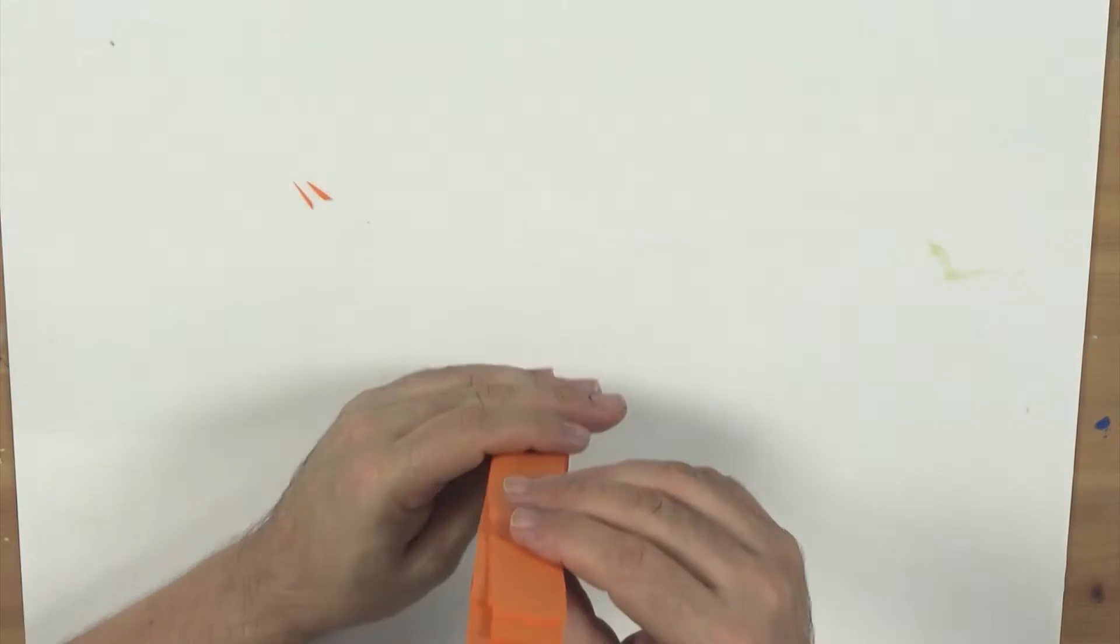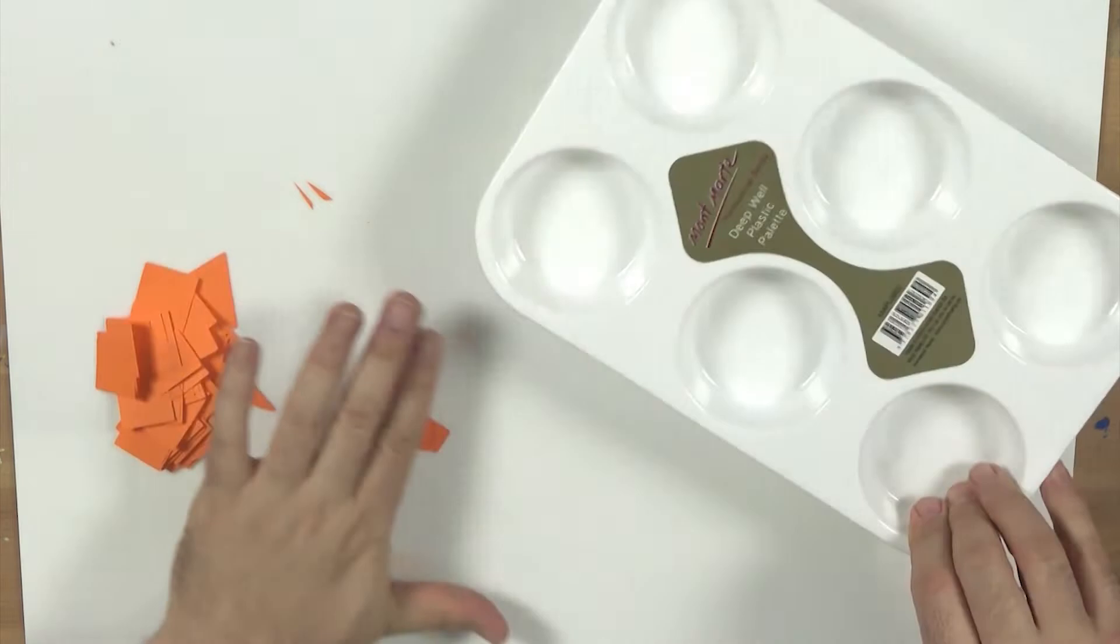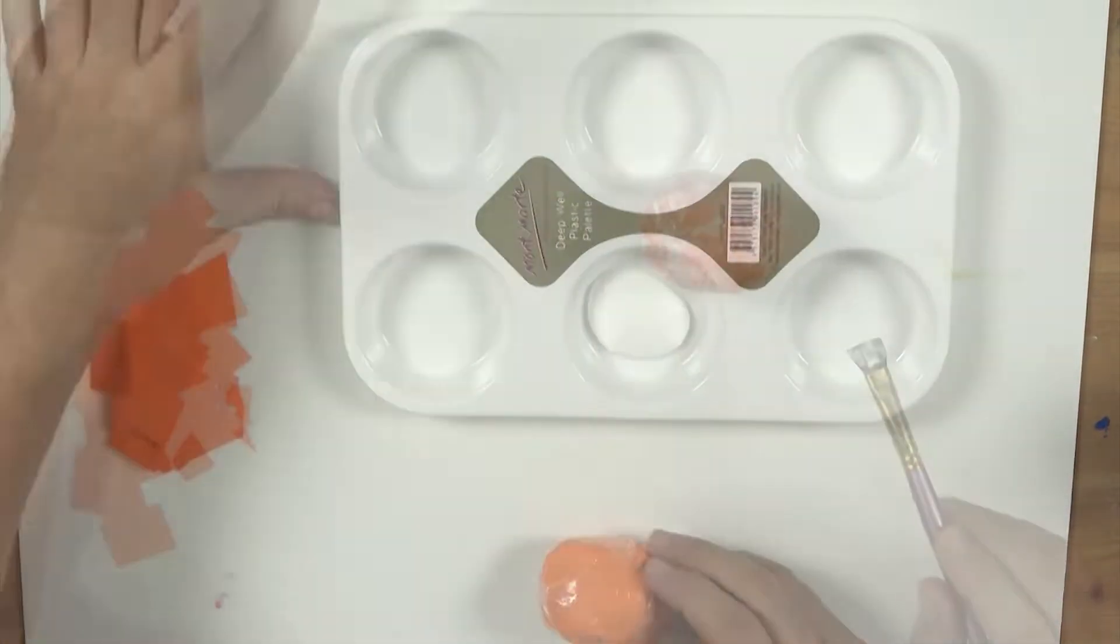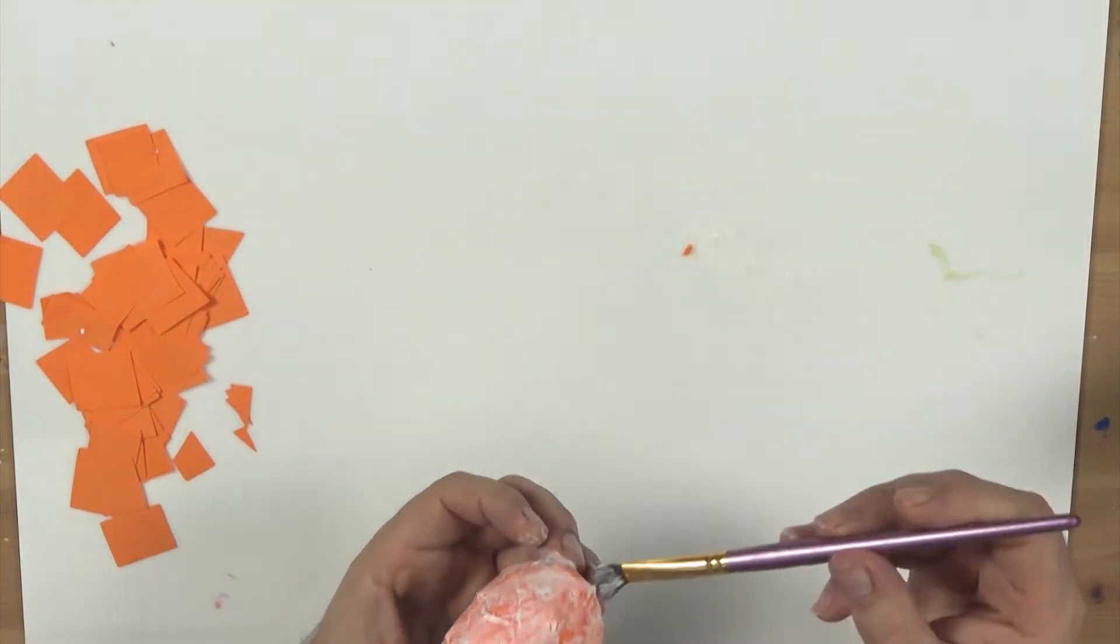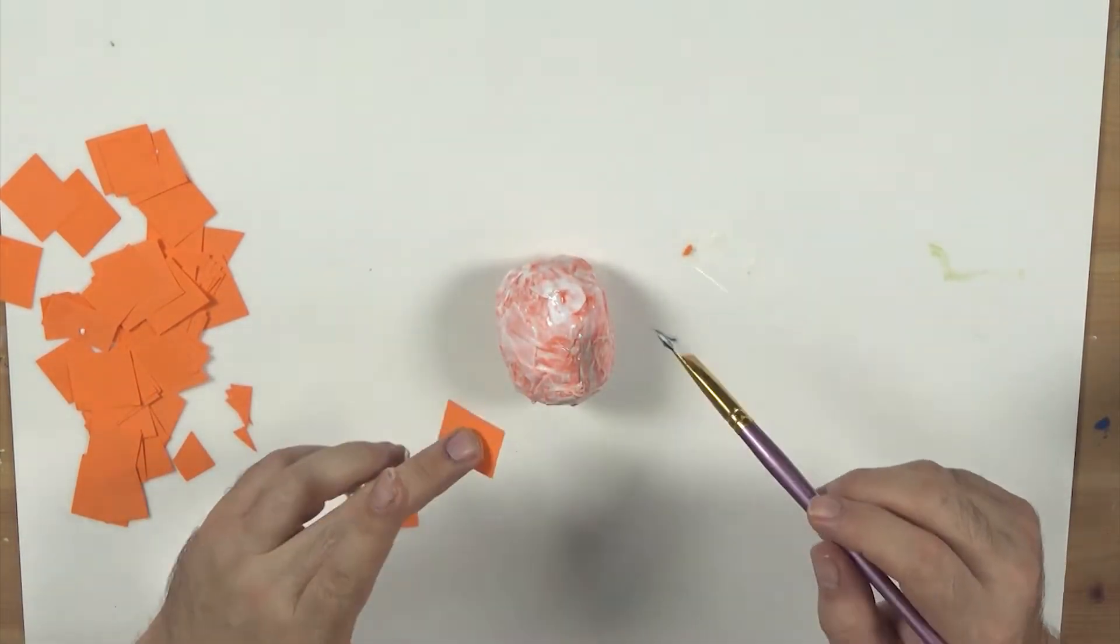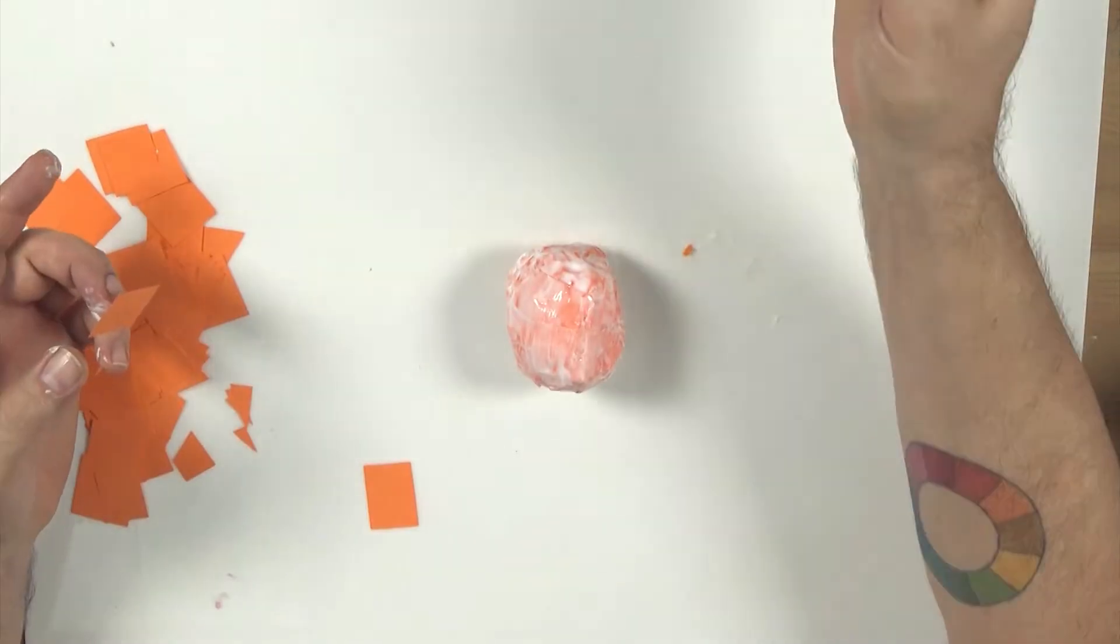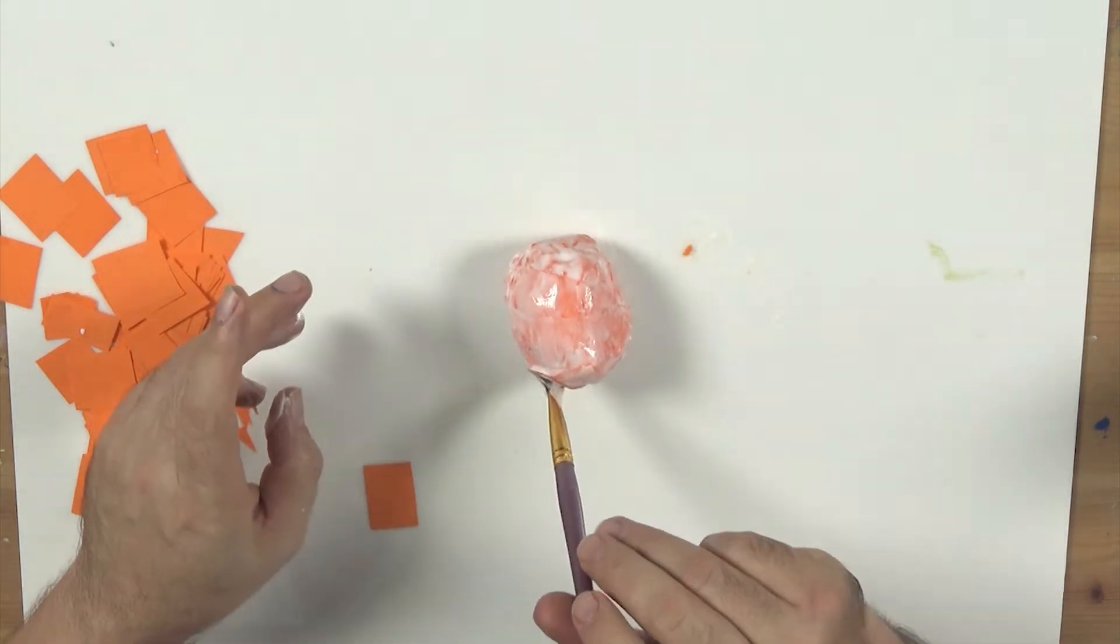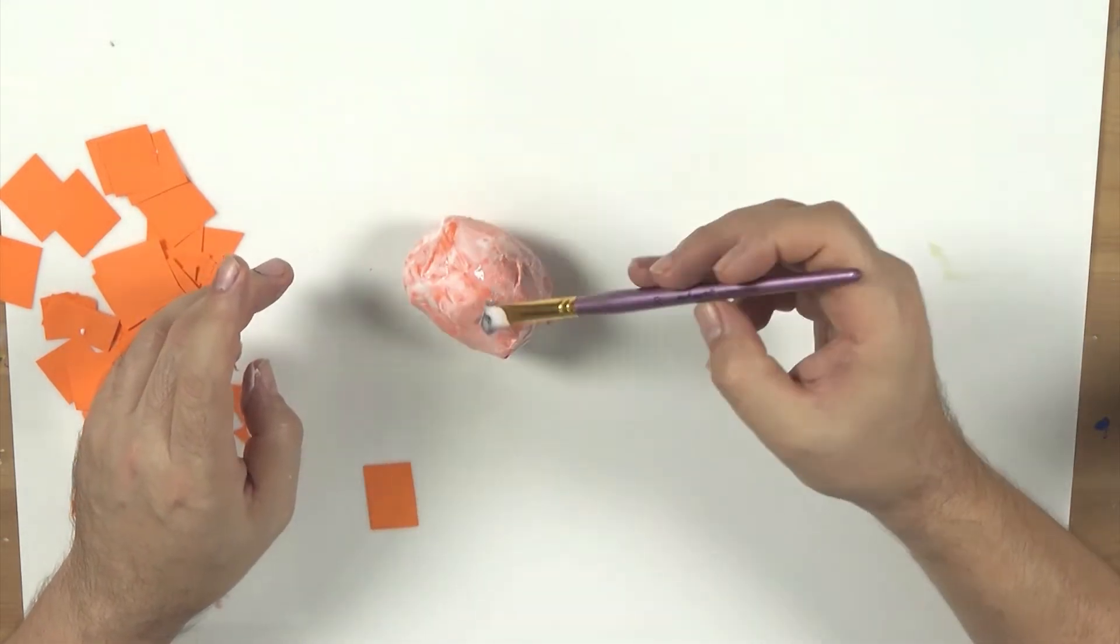Once we have our paper prepared, we can start applying it to the taped up ball. Squeeze out some PVA glue into a deep well plastic palette and paint a thin coat over the oval ball. Once the ball is coated in glue, we start to apply the paper one bit at a time, then add the next but overlap it slightly over the first. Continue with this until the ball is totally covered with paper. Once it's covered, give it a final all-over coat of glue and let it dry. PVA is ideal for paper mache type projects as it dries so clear.